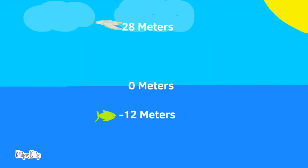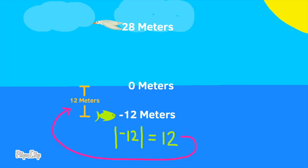The surface of the ocean, or the sea, is sea level, or zero meters. The distance between the sea level and the fish is 12 meters. The absolute value of negative 12 is 12. In other words, an elevation of negative 12 is still 12 meters below sea level.